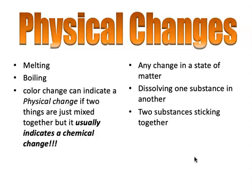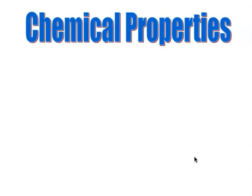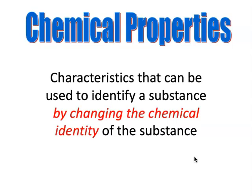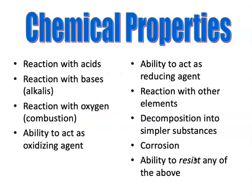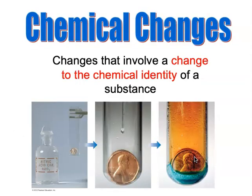Physical changes and physical properties are contrasted with chemical properties. This is where things get more exciting — when you test a chemical property, you actually change the chemical identity of the original substance. Key words associated with chemical properties include reaction and decomposition, and even the ability to not react is an example of a chemical property. A chemical change similarly changes the chemical identity of a substance.